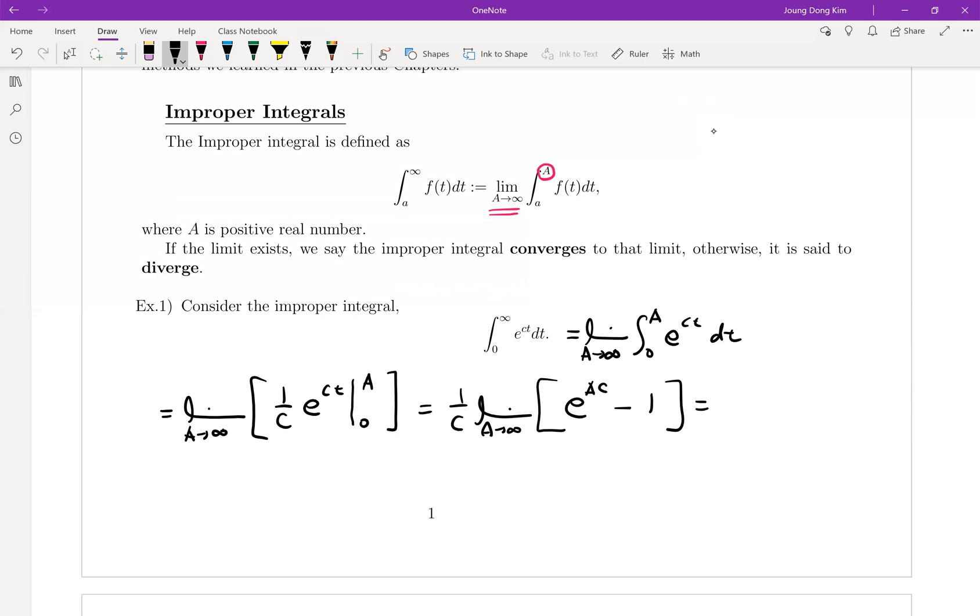First of all this value can converge if your c is negative. What does that mean? C negative means your exponent of the exponential function is negative, which means whenever a is increasing this will be e to the minus infinite which equals zero. Since this part equals zero, your improper integral value is negative one over c. I'm talking about one over c times negative one.